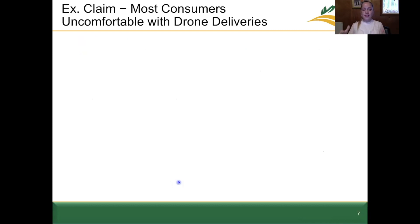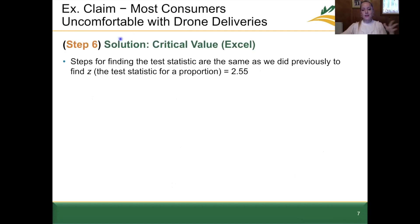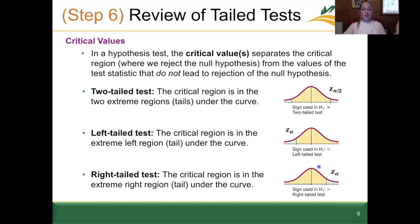Let's come back to the example of the claim that most consumers are uncomfortable with drone deliveries. We're starting with the critical value method at step 6. We're not going to recalculate the z test statistic of 2.55 — if you need a refresher on that, go back to 8.2 part 1. We have our test statistic set aside while we calculate our critical value. The drone example was a right-tailed test — again, see 8.2 part 1 for how we determined that.